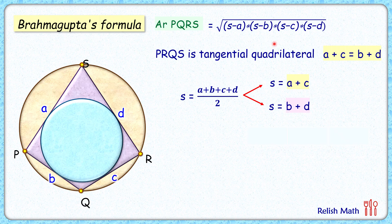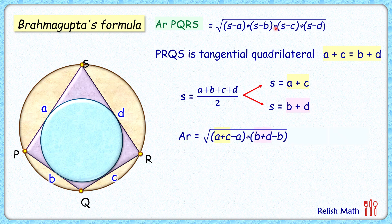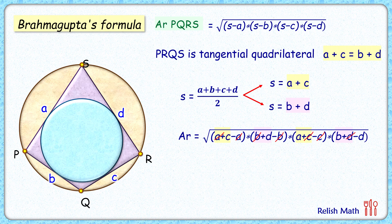Now we substitute these values into the equation. Area of PQRS: replace s with a + c in the first term, s with b + d in the second term, s with a + c in the third term, and s with b + d in the fourth term. Looking carefully, a cancels, b cancels, c cancels, and d cancels, giving area = √(cdab).